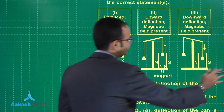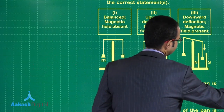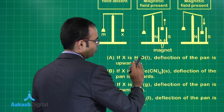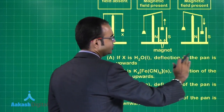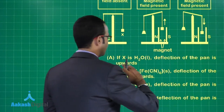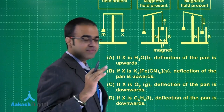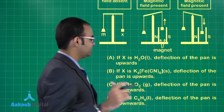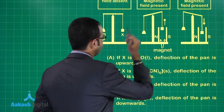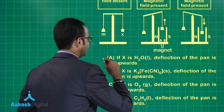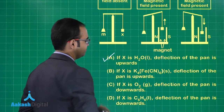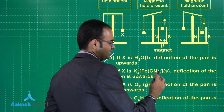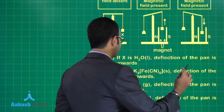Let us look at the options. If X is H₂O, deflection of the pan is upwards — is H₂O diamagnetic? Yes, it is, so the pan will get deflected upwards. That is correct. If X is K₄[Fe(CN)₆], deflection of the pan is also upwards.